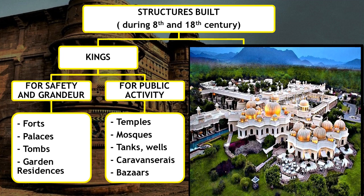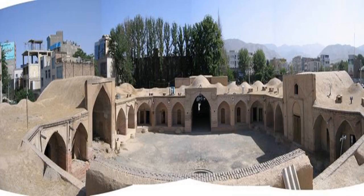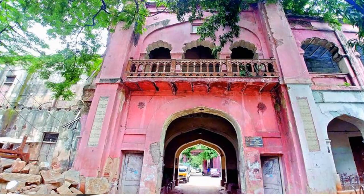For public activity, they got temples, mosques, tanks, wells, caravan sarais, and bazaars constructed. A caravan sarai is an inn meant for travellers — when travellers move from one place to another and need to rest at night. It is just like a hotel built by the government but for free.